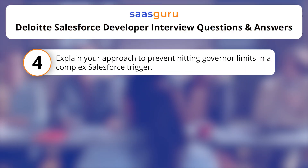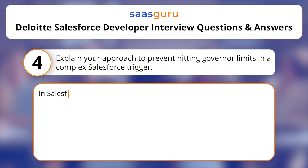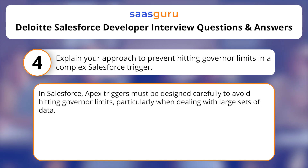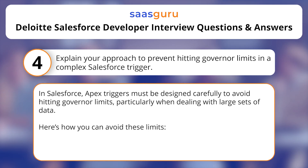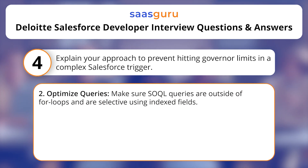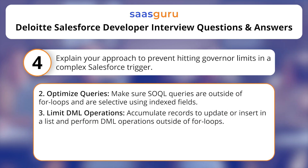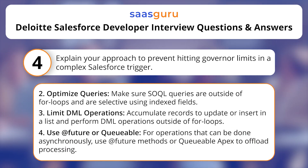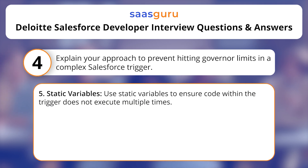Explain your approach to prevent hitting governor limits in a complex Salesforce trigger. In Salesforce, APEX triggers must be designed carefully to avoid hitting governor limits, particularly when dealing with large sets of data. Here's how you can avoid these limits. Bulkify your code — write triggers that can handle multiple records at a time. Optimize queries — make sure SOQL queries are outside of for loops and are selective using indexed fields. Limit DML operations — accumulate records to update or insert in a list and perform DML operations outside of for loops. Use @future or Queueable for operations that can be done asynchronously — use @future methods or Queueable APEX to offload processing. Static variables.